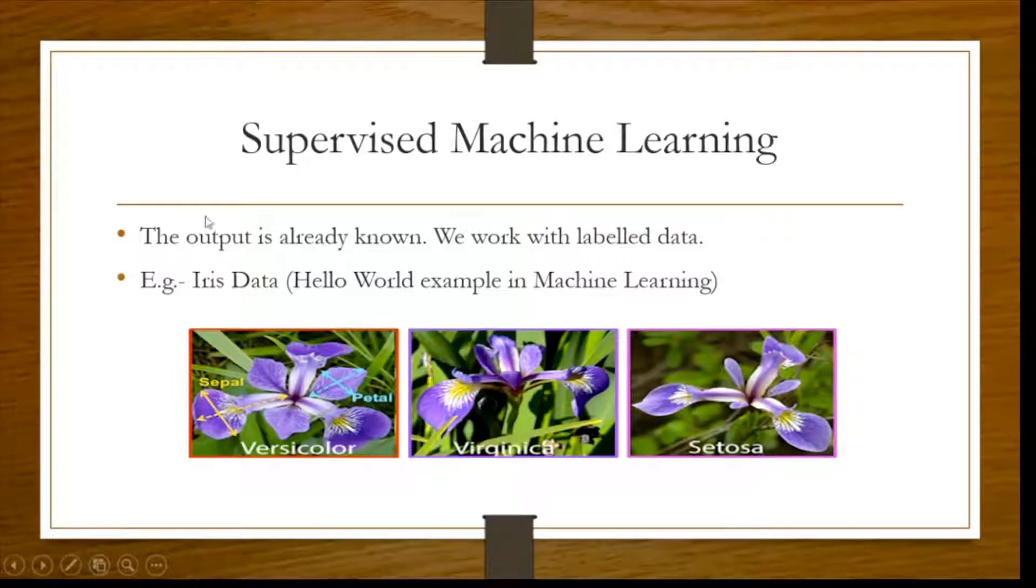This means that the output is already known and this is also called the labeled data set. We have the labeled data set with us which we have to train a machine to that output. Suppose this iris data set we have, and iris is a flower species with three different species or targets and these are labeled: Versicolor, virginica and setosa. So you can see that they are labeled. Now you have to train your model on these species, on these labeled data.